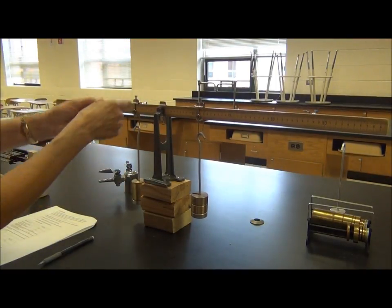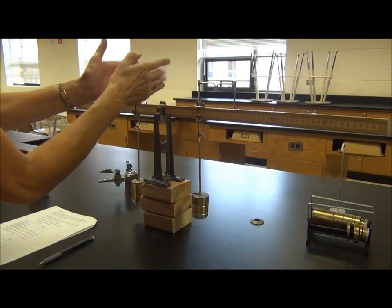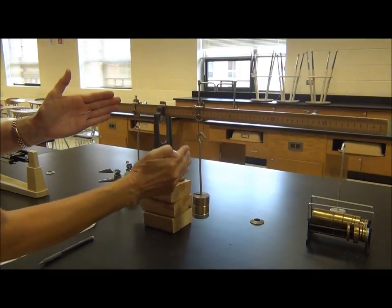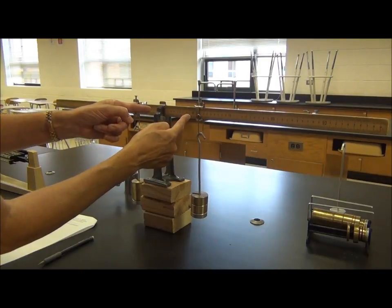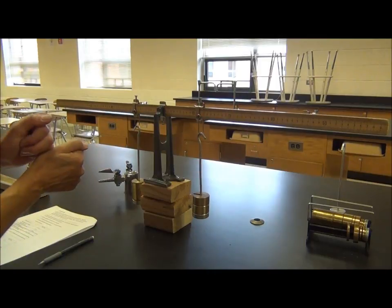So this is F1, D1. The lever arm distance is between where it is hanging and the fulcrum. This is F2. This would be D2, the difference in the distance from where the mass is hanging to the fulcrum or balancing point.